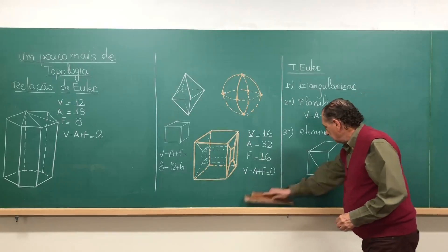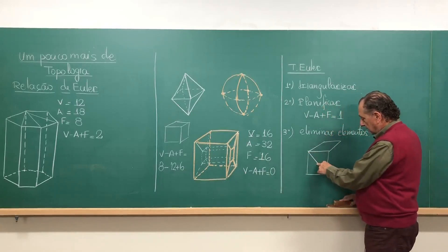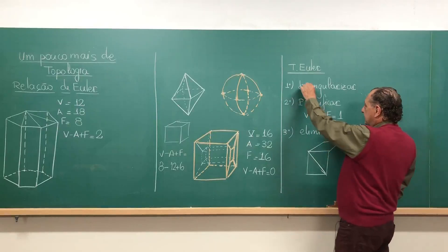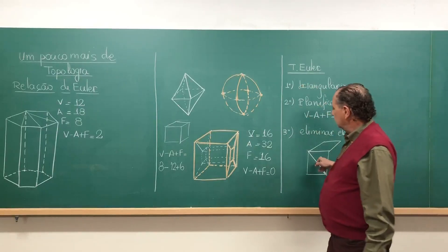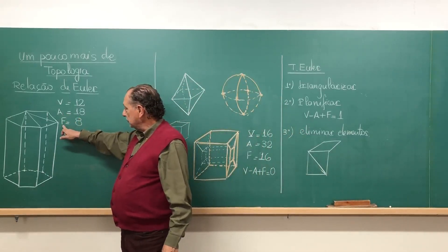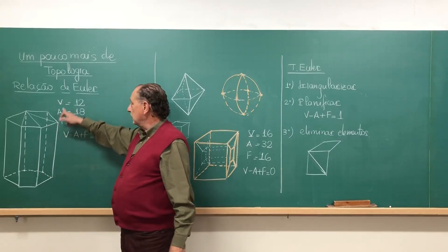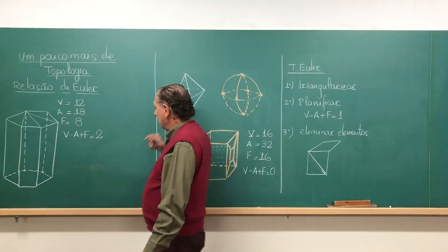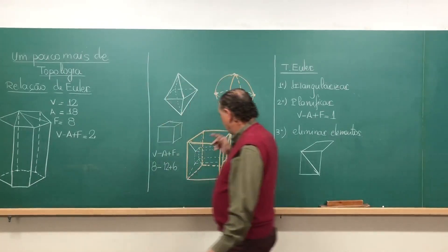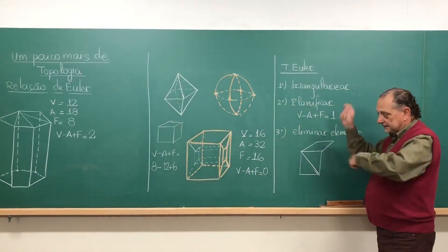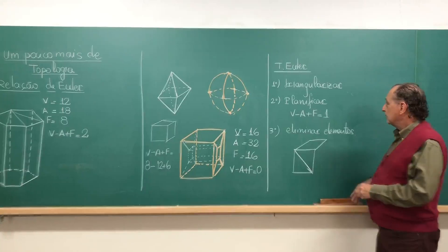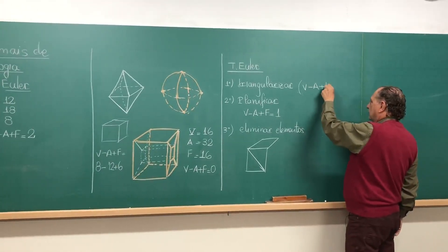First observation, when you do this, you introduce an aresta and you make what was one face become two faces. So the process of triangularizing alters the number of arestas, because it increases one. It alters the number of faces, because it increases one. And doesn't touch the number of vertices. So, increases one aresta, increases one face, is minus aresta, plus face, doesn't change anything. Then I begin with a certain polyhedron, trace a bunch of diagonals on the faces, until everything becomes triangles. And it continues, V-A+F was not altered.